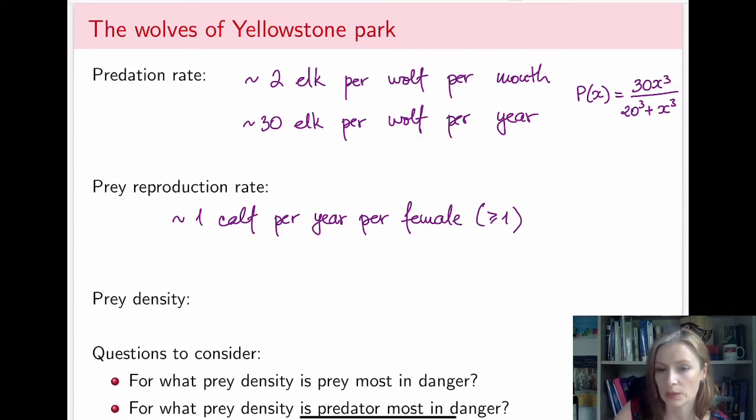Now, the female has to be at least one-year-old. Now, sometimes they will have two calves, but very rarely. And the other piece of information that is useful here to know is that approximately 70% of the herd is female.